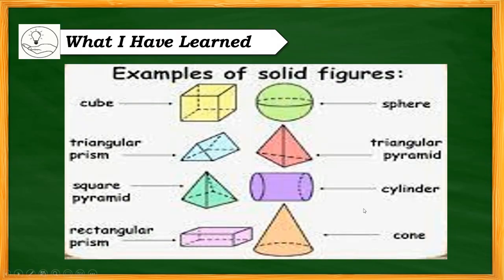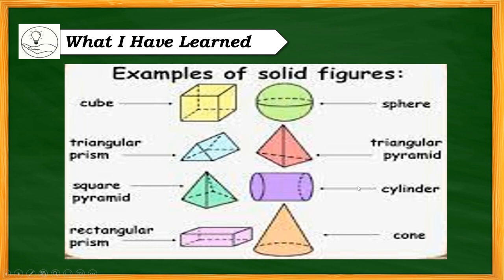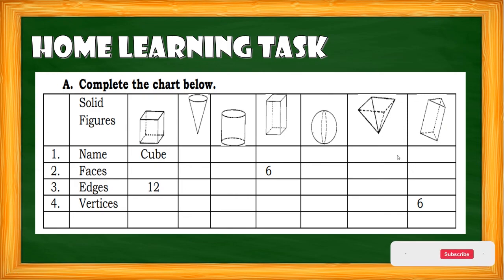So what have you learned in today's lesson? Examples of solid figures are cube, triangular prism, square pyramid, rectangular prism, sphere, triangular pyramid, and cylinder cone. Take note of each of the properties of the solid figures. For your home learning task, Grade 6 pupils need to complete a chart with the properties — edges, vertices, and faces — for each solid figure: cube, cone, cylinder, rectangular prism, sphere, square pyramid, and triangular pyramid. That's all for today. Thank you and God bless everyone.